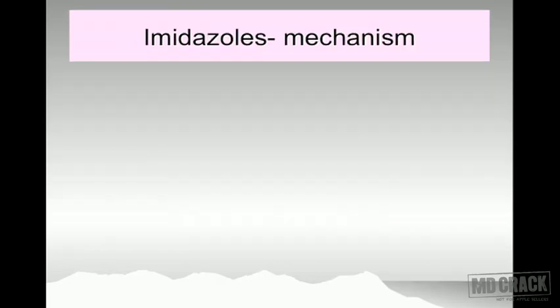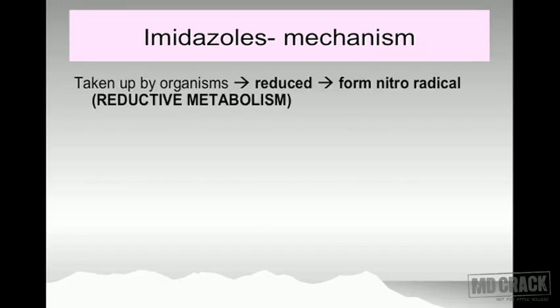Going to the next slide — what's the mechanism of action? It's a very typical mechanism. The drug is taken up by the microorganism, gets reduced, and is converted into its next form. It forms a nitro radical because the drug is getting reduced — this is called reductive metabolism.